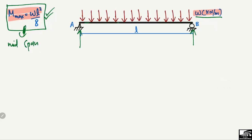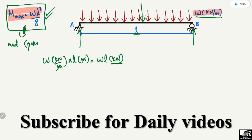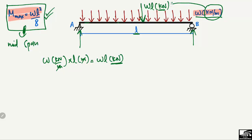w is a distributed load in kilonewtons per meter. If we convert this load into a pointed load by multiplying with the whole length of the beam L, the meters cancel and we get wL in kilonewtons — a concentrated load. This load will act at the center point of the beam, i.e., wL in kilonewtons, transferred from distributed to concentrated load, acting at the midpoint of the beam.